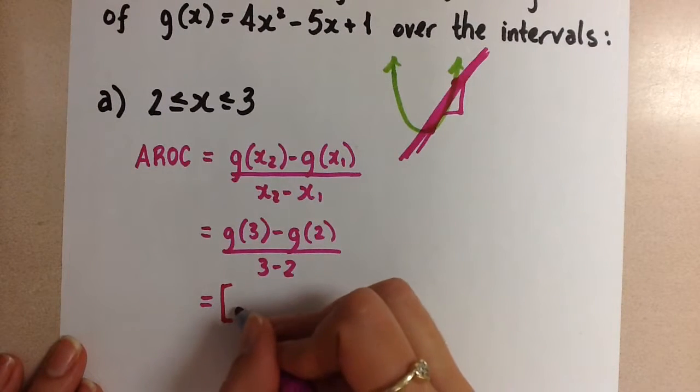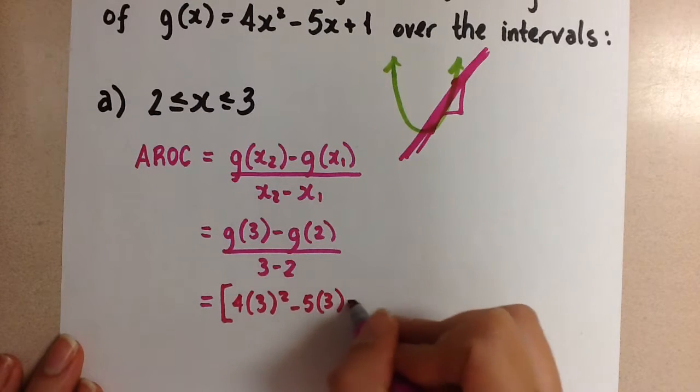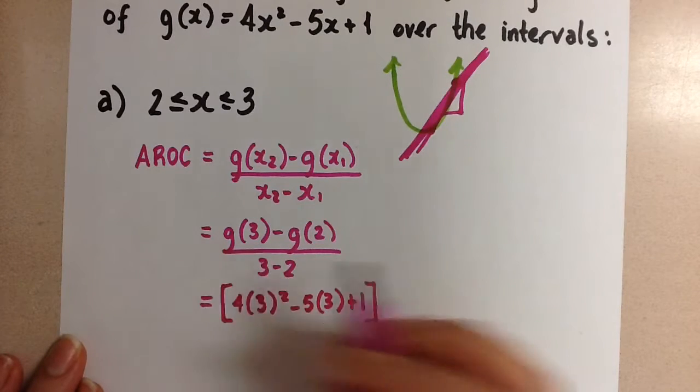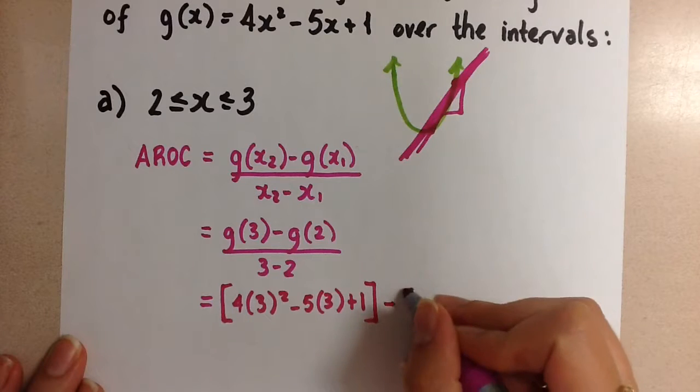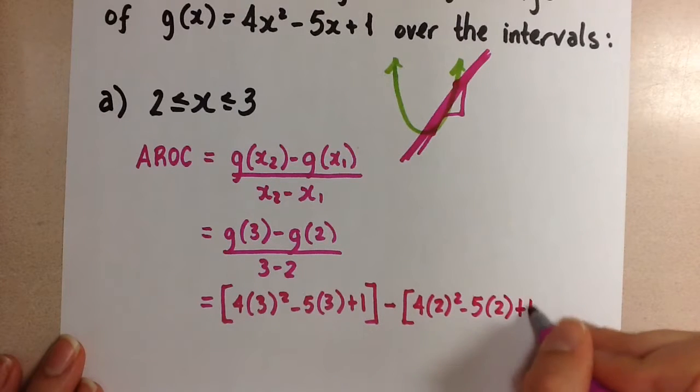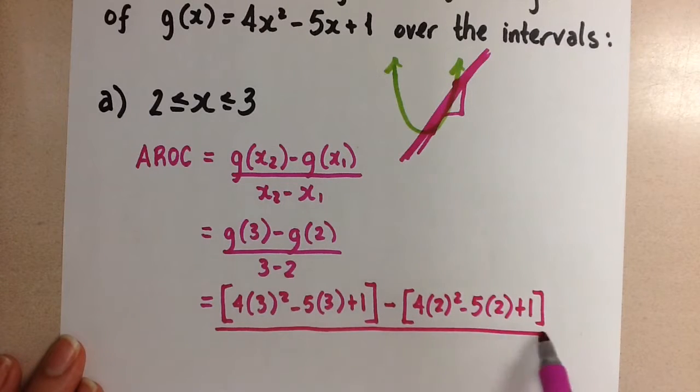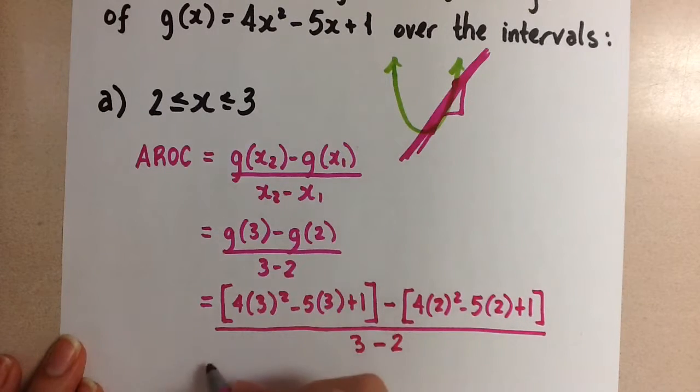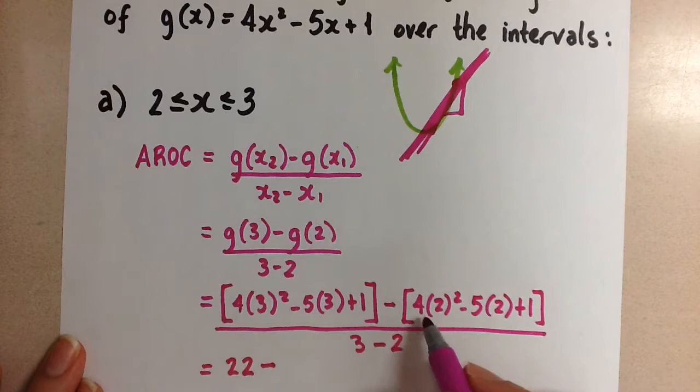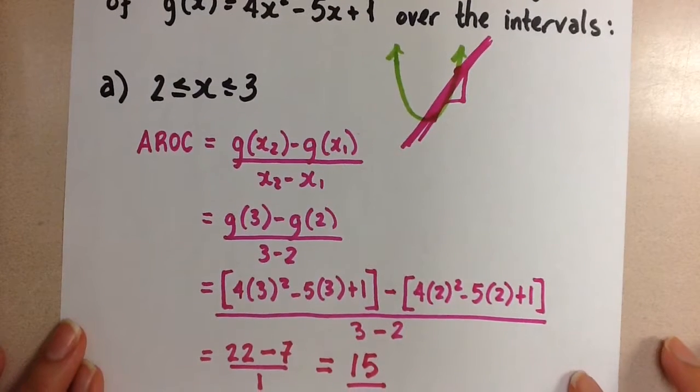So this is going to look like [4(3)² - 5(3) + 1] minus [4(2)² - 5(2) + 1]. That's the g(3) portion minus the g(2) portion there. And of course, this is still over 3 minus 2. So if we calculate this part, we're going to get 22 minus 7, and then over 1. And then when we calculate that, our average rate of change is going to be 15 for this problem.